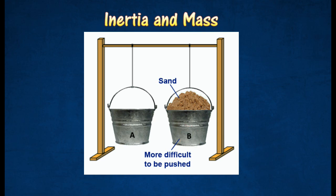When both of the tins are given a short sharp push of the same strength, tin B is found to be harder to move compared to tin A. Tin B is also found to continue swinging over a longer period of time compared to tin A.